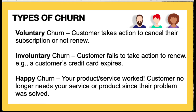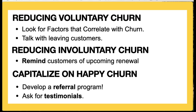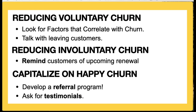So how do we deal with these different types of churn? For reducing voluntary churn — those people leaving on purpose — look for factors that correlate with churn. Is there something about the population of folks that leave your business that differentiates them from those that stay? What makes your product sticky for some and not others? Talk with your customers, ask them to fill out a survey, or do a full phone interview to ask why they have left.